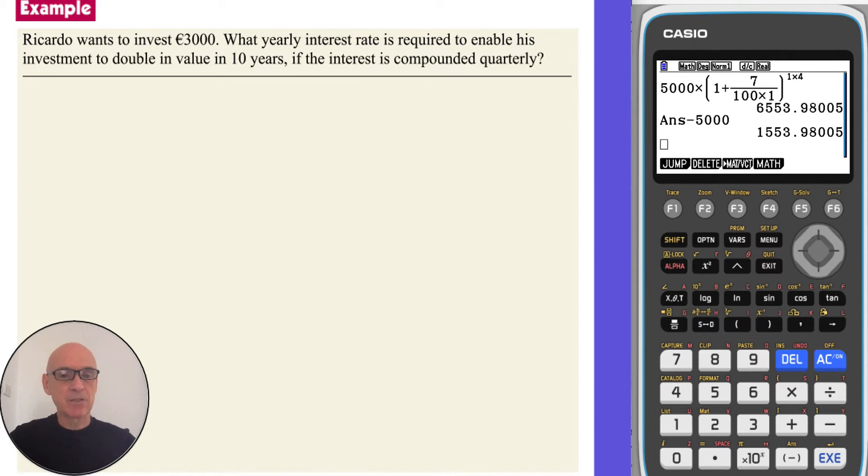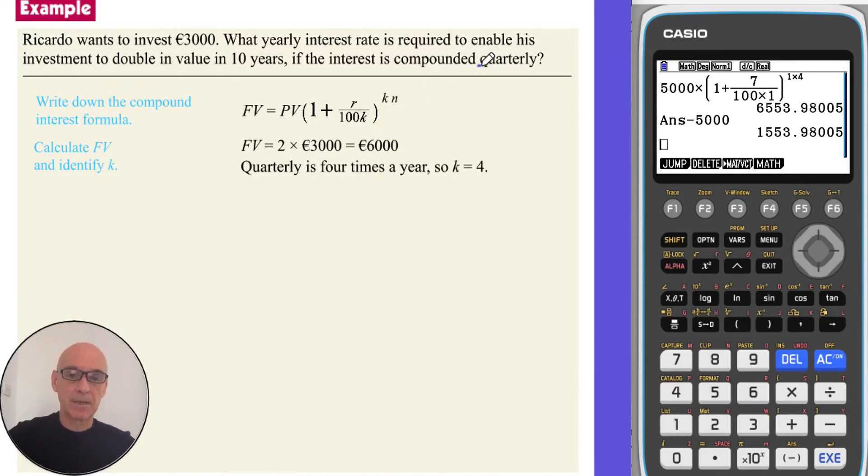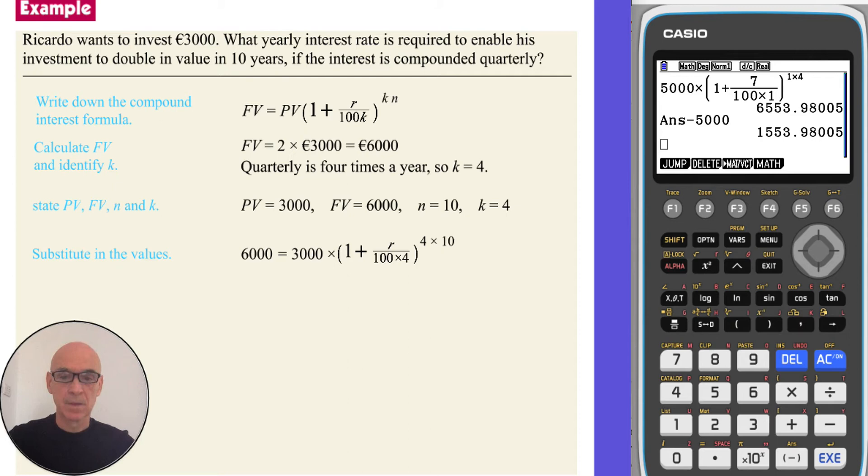In this question, we're asked to find what yearly interest rate is required to double Ricardo's investment in 10 years. So if we begin by writing down the formula for compound interest and calculate the future value, double 3000 will be 6000 euros. And since the interest is compounded quarterly, which is 4 times a year, we can identify K as being equal to 4. So if we state the present value PV, which is 3000, the future value FV, which has to be 6000, the number of years N, which is 10, and of course K, which was 4, and if we substitute these values into the formula to form an equation with R, we can use solver on the calculator to find R.